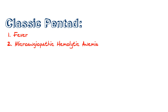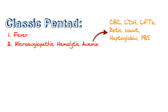Two is a microangiopathic hemolytic anemia. You can diagnose this by getting some basic lab work: obtaining a CBC to look at anemia, LDH to look at cell death, LFTs to look at an unconjugated hyperbilirubinemia, a retic count to see the body's response to the anemia, haptoglobin to see that hemoglobin is being shed out or red blood cells are being opened up, and a peripheral blood smear to look at schistocytes.